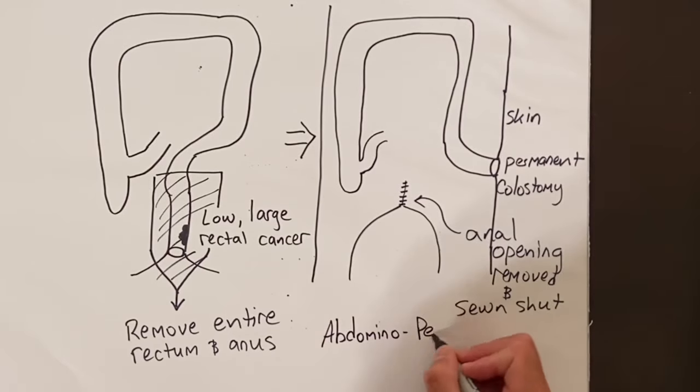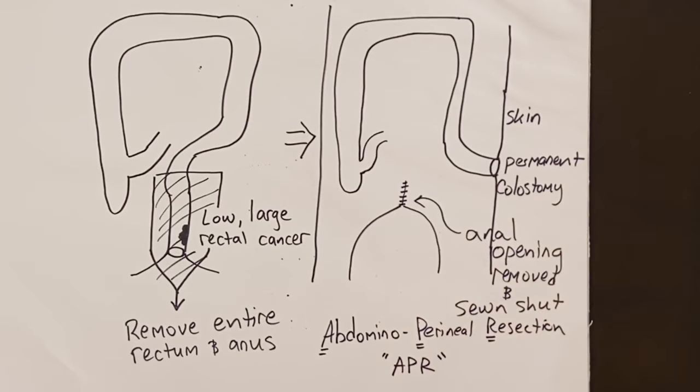We try not to have to do this surgery, and if we can get even one or two centimeters below a rectal cancer and leave enough anal muscles to allow for continence of stool, we will try to avoid the APR surgery and do the LAR plus or minus ileostomy surgery.